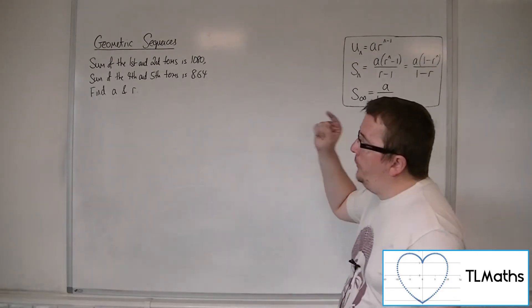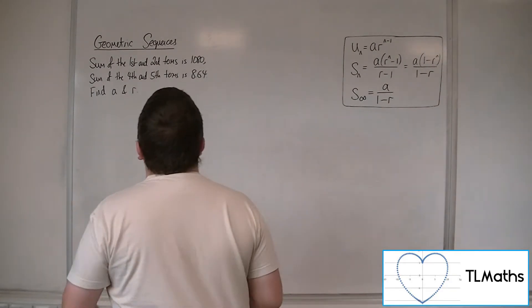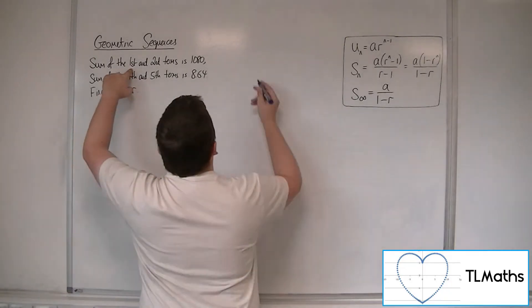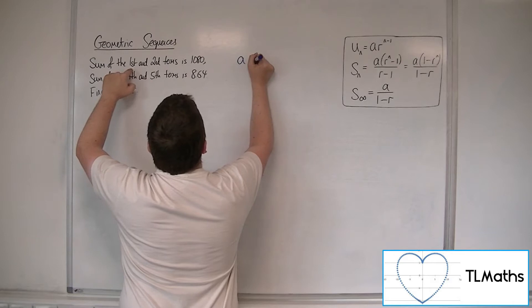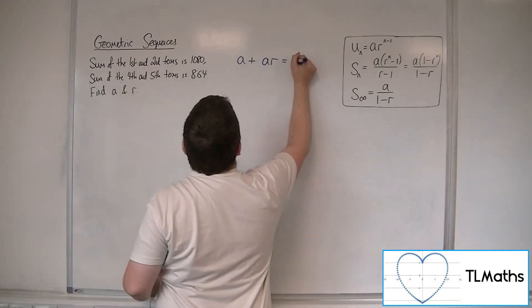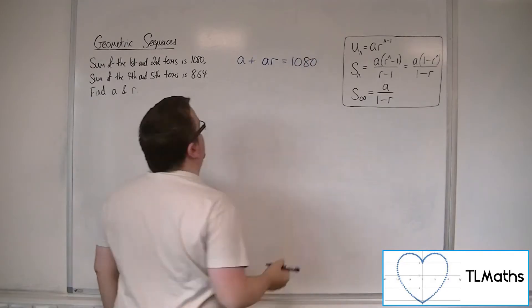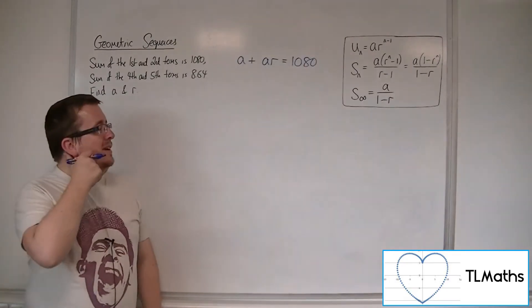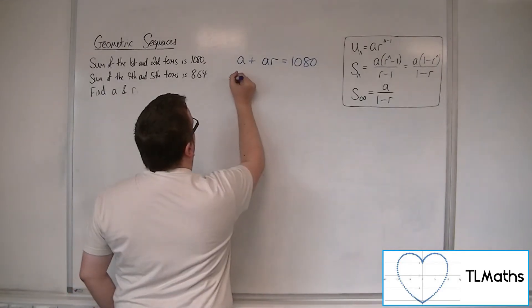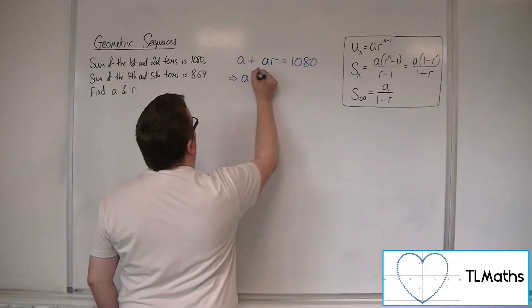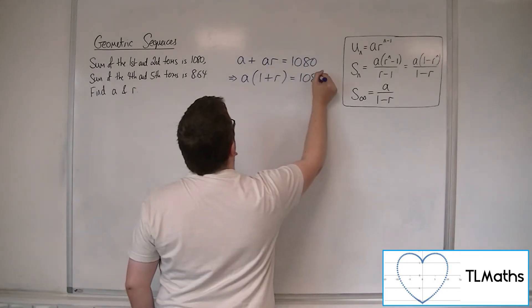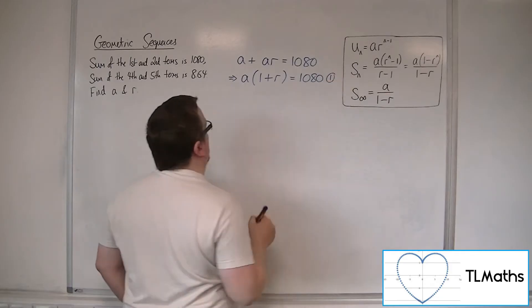If the sum of the first and second terms is 1080, remember the first term is just A. So I could write that as A plus, the second term will be A times R, and that equals 1080. I'm not going to leave it like that. It makes sense to factorise the left-hand side. I can pull A outside of a single bracket and have 1 plus R inside the bracket. Let's call that equation number 1.